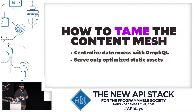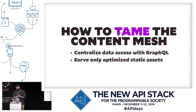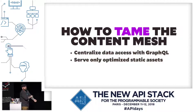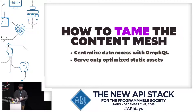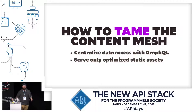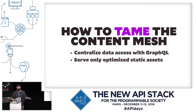So how do we tame this content mesh? How do we get all these benefits of this amazing new paradigm in a manageable way? The first thing is to centralize your data access using GraphQL. The second thing — and this is more controversial — is that we should only be serving optimized static assets. I want to remove servers from the consideration when you're serving a UI. You should just be building assets, putting them on an S3 bucket or into cloud storage, and then on a CDN.